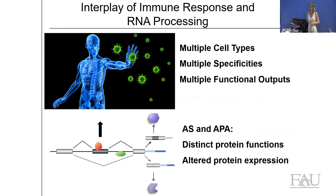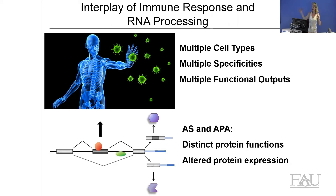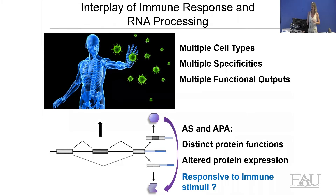In sum, control of alternative splicing and alternative polyadenylation through RNA binding proteins ultimately impacts protein expression and protein function in a way that could give rise to functional complexity and responsiveness in the immune system. Theoretically that makes sense — you have a complex system that needs to respond, and you have mechanisms that allow for complex responses. But are these things really connected? That's what my lab set out to address.